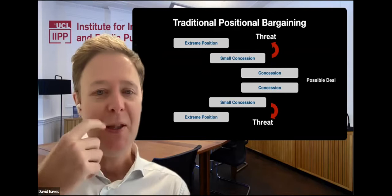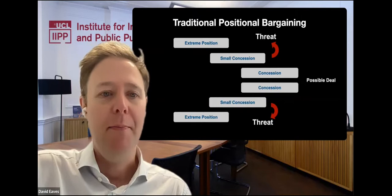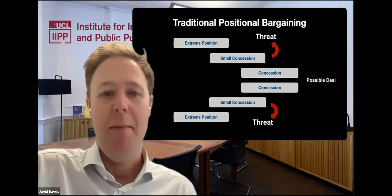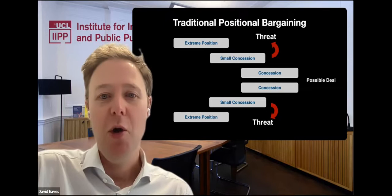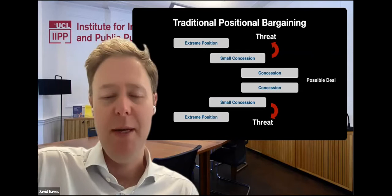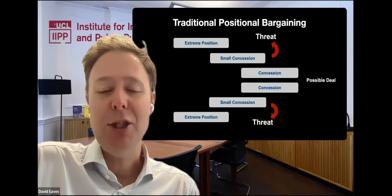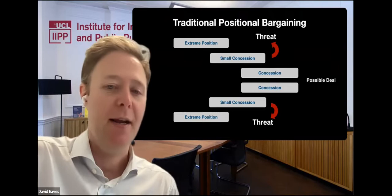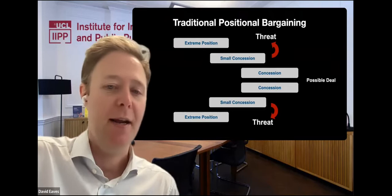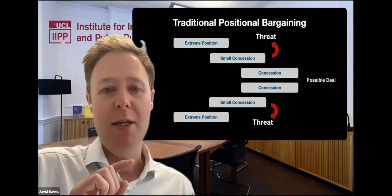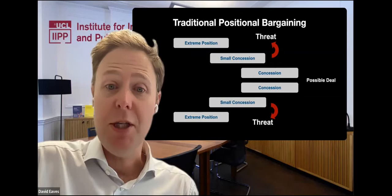For many people this is what negotiating looks like, and there are a lot of challenges with this process. It's actually hard to know if you're getting a good outcome — you're measuring success based on what the other person says they'll accept, not what you actually want. The process is also very hard on relationships. We're threatening and testing each other, and many negotiations — especially in software development — are the start of a relationship and collaboration. This fraught process often damages trust and sets us on a terrible footing for long-term partnership.